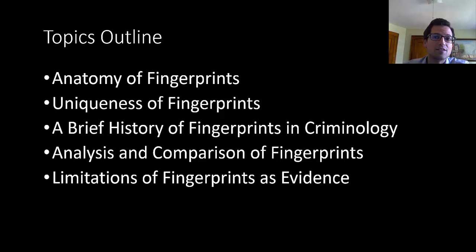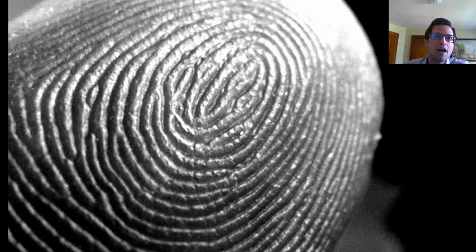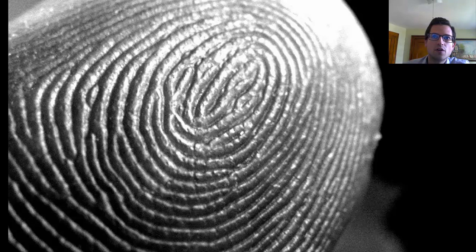So our first question is, what are fingerprints? Where do they come from? What I have here is a close-up image of the friction ridges on the surface of a finger. You can see these raised areas on the surface of the finger and the depressed areas in between them. This is what your fingertips would look like if you were able to magnify them.